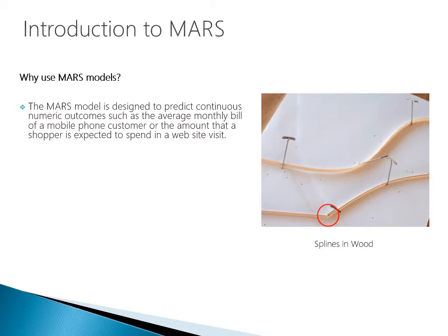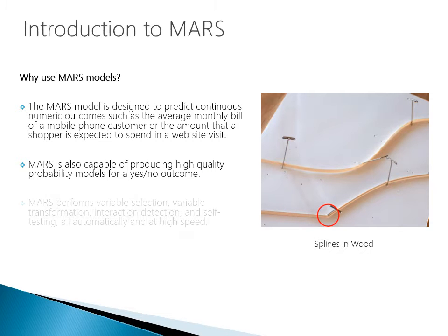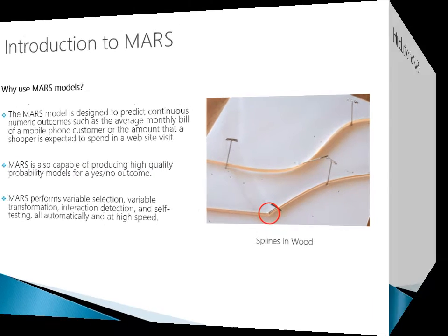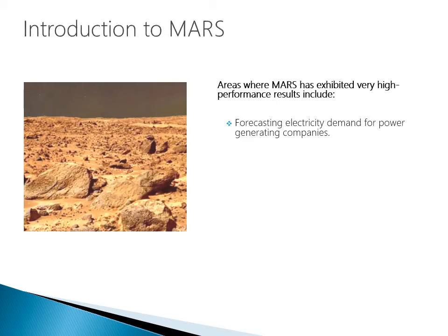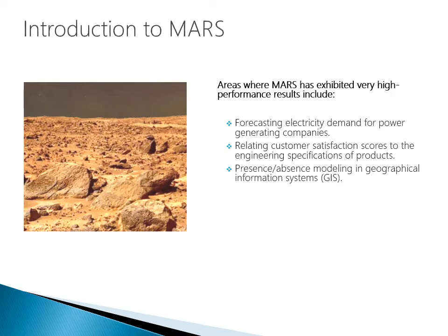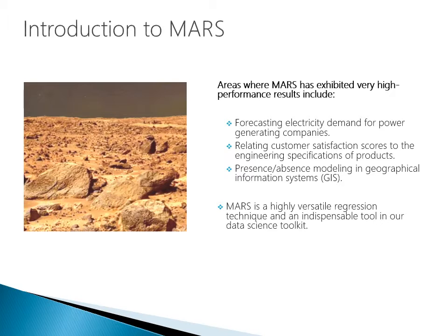The MARS model is designed to predict continuous numeric outcomes, such as the average monthly bill of a mobile phone customer, or the amount that a shopper is expected to spend in a website visit. MARS is also capable of producing high-quality probability models for a yes-no outcome. MARS performs variable selection, variable transformation, interaction detection, and self-testing, all automatically at high speed. There are some areas where MARS has exhibited high-performance results, including forecasting electricity demand, relating customer satisfaction scores to engineering specifications, and presence-absence modeling in geographical systems. MARS is a highly versatile regression technique and an indispensable tool in our data science toolkit.